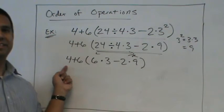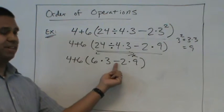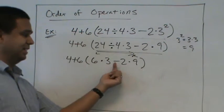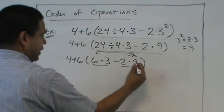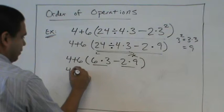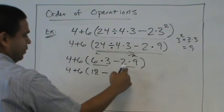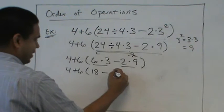What would we do next? 6 times 3. Multiply. So we're going to multiply before subtracting. We're still in the parentheses. We're going to multiply before we subtract. 6 times 3? 18. 2 times 9? 18.